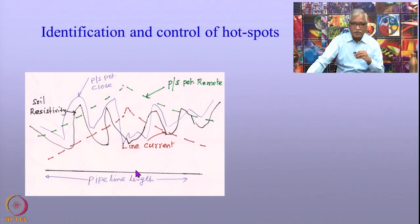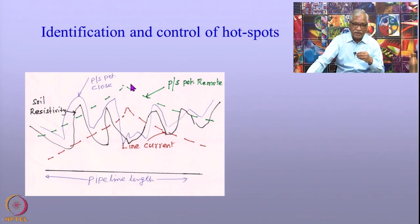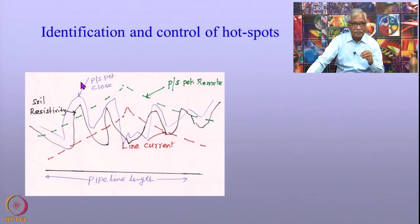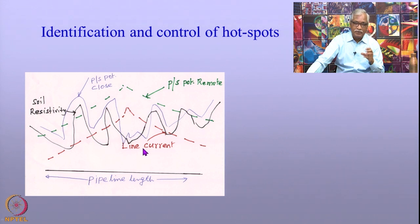Overall, at a particular location the pipe-to-soil potential remote is relatively positive, and we also see that at this location the current leaves the pipeline — it is higher here. So this location corresponds to the anode, meaning the pipeline at this location will experience more severe corrosion relative to the remaining segment. It is therefore possible to identify hard spots using all four parameters: pipe-to-soil potential remote, pipe-to-soil potential close, soil resistivity, and line current measurements.